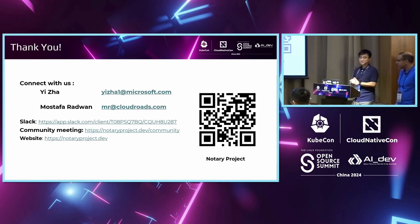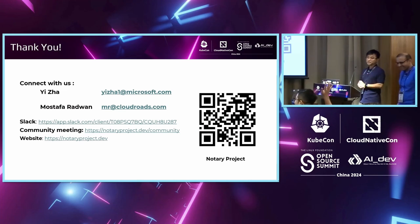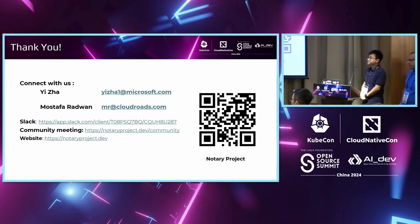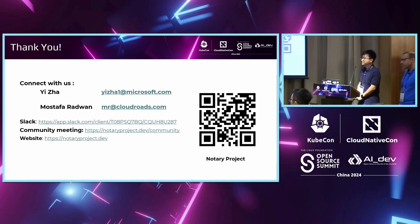Now for Q&A. If you have a set of images already deployed and later CVEs are discovered in those images, is there a way to mark certain images as not allowed to be pulled?